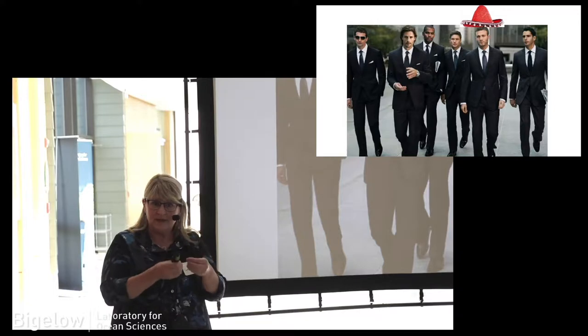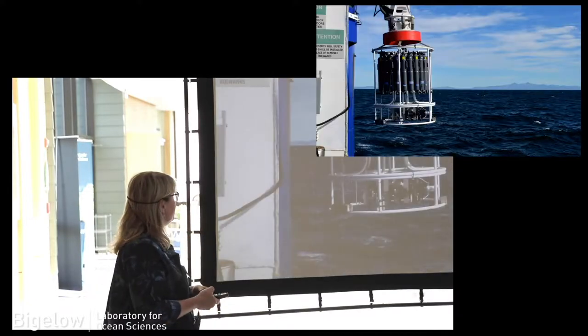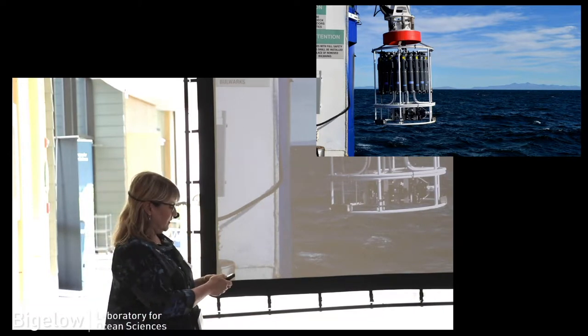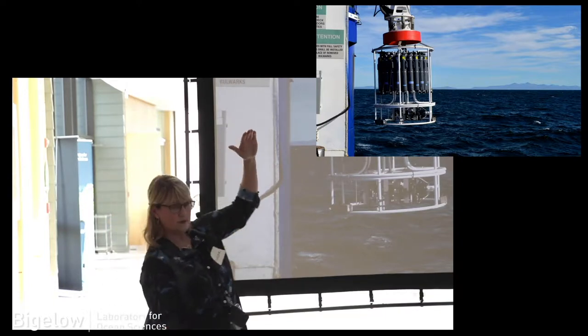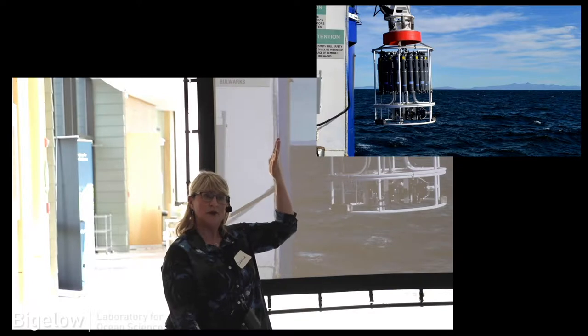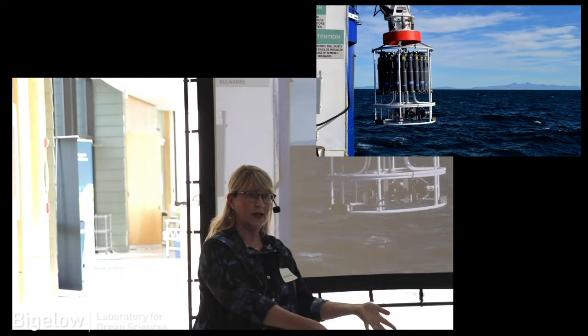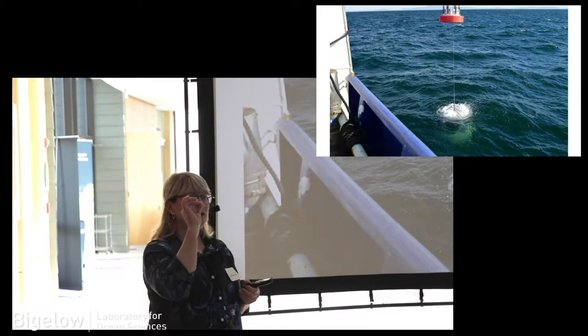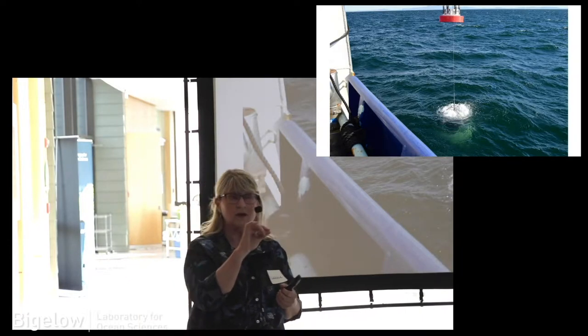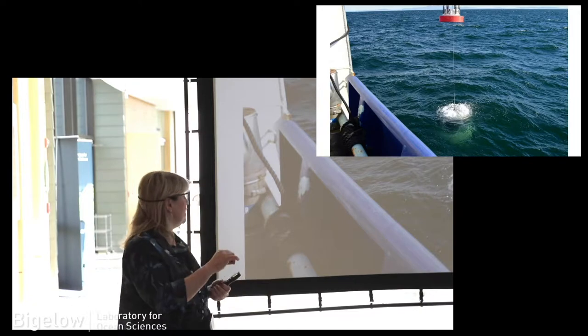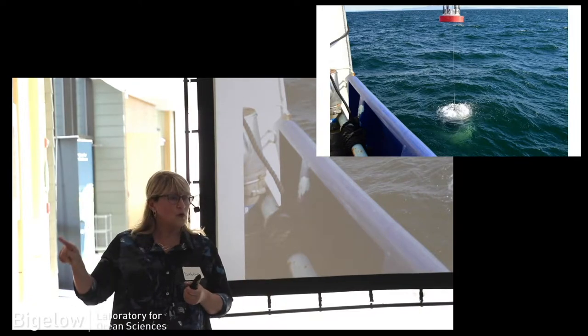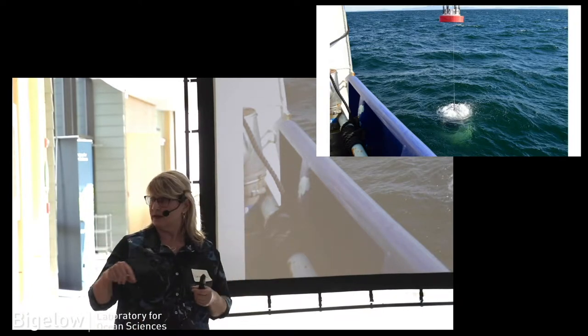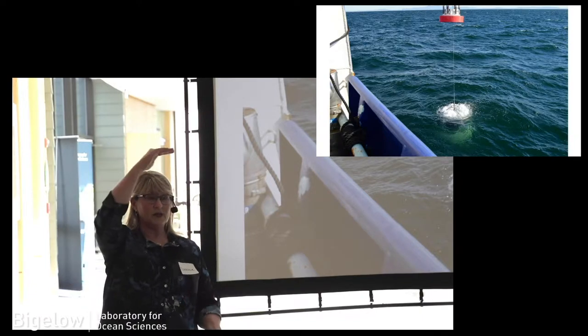Because we can tag that nitrogen, we can then watch how fast it's taken up into cells. The way we do this work is we put something called a CTD over the side of the ship. Each one of these gray cylinders is almost as tall as I am. And we put this instrument over the side. And as it goes down into the water, it's measuring all these different characteristics of the water. Whether it's fluorescence, which can tell you where the phytoplankton are, temperature, salinity, how much salt is in the water. And then we decide where we're going to collect our water.